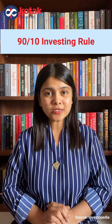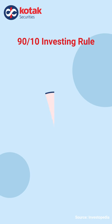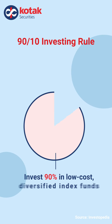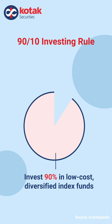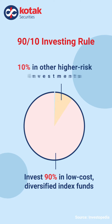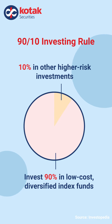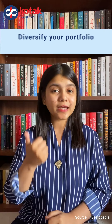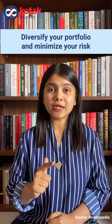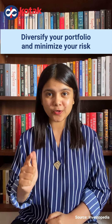The rule states that you should invest 90% of your money in low-cost diversified index funds and the remaining 10% in individual stocks or high-risk investments. By following this rule, you can diversify your portfolio and at the same time minimize your risk.